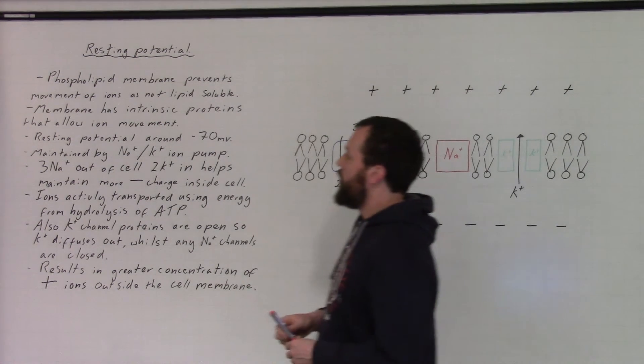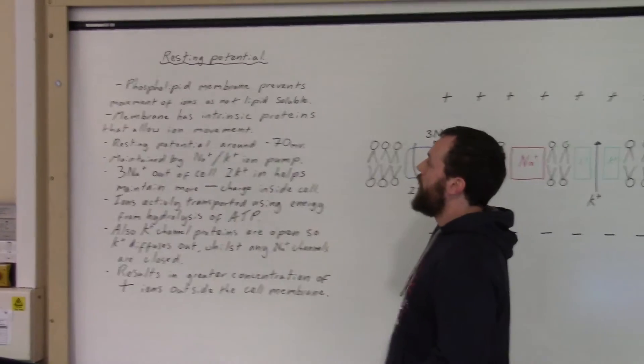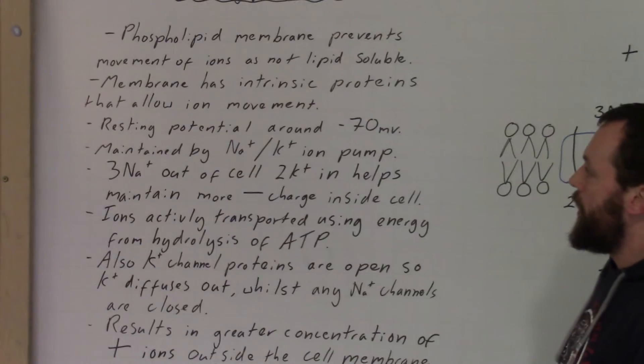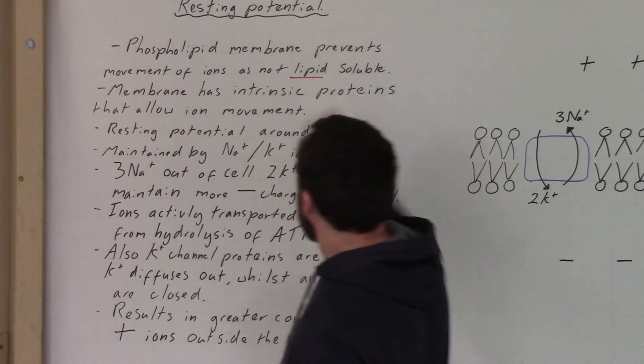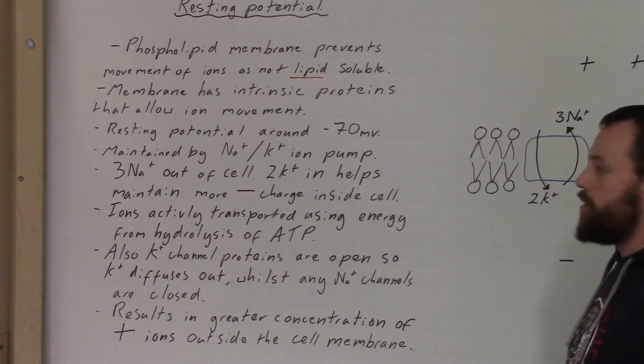If we look at the mark points on this, as I mentioned at the top, the section about the phospholipid layer is just to bring in how these ions are not lipid soluble and therefore cannot travel through the membrane.